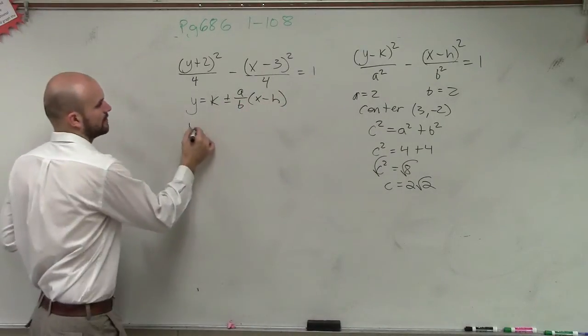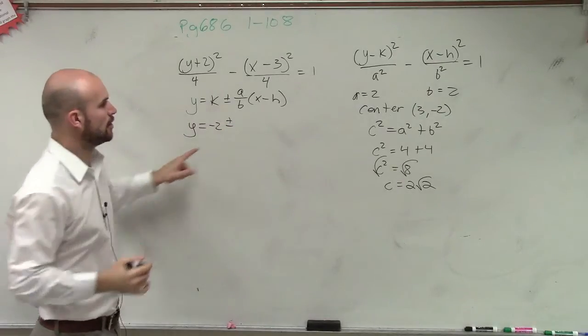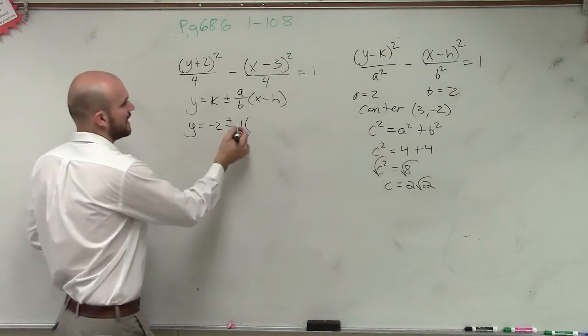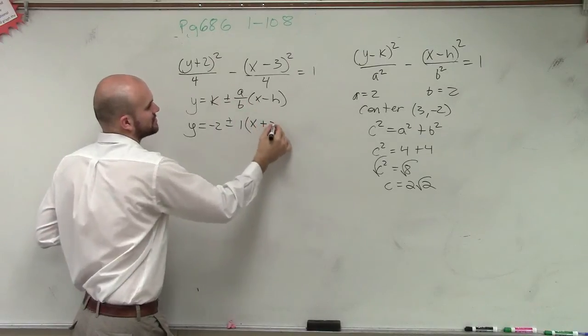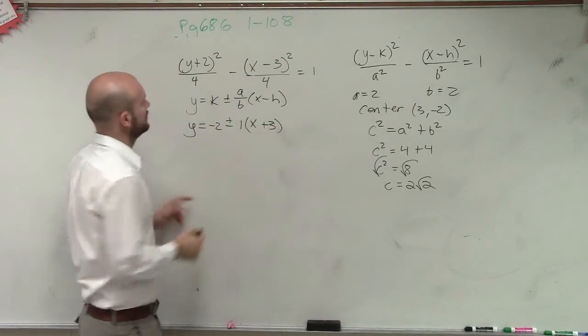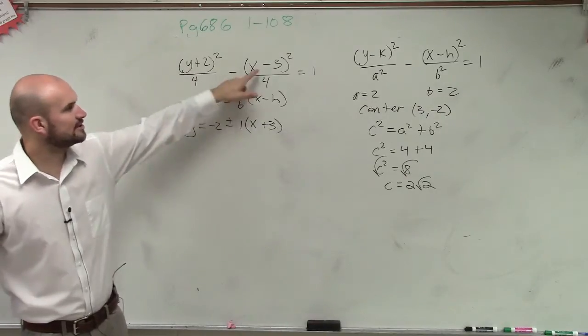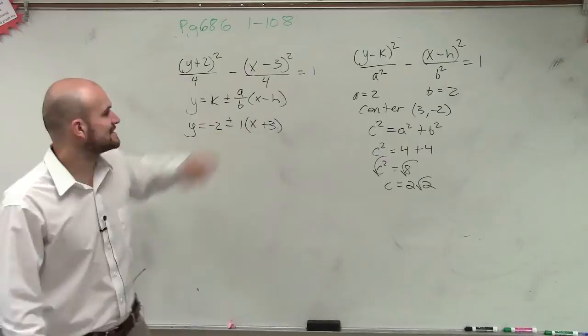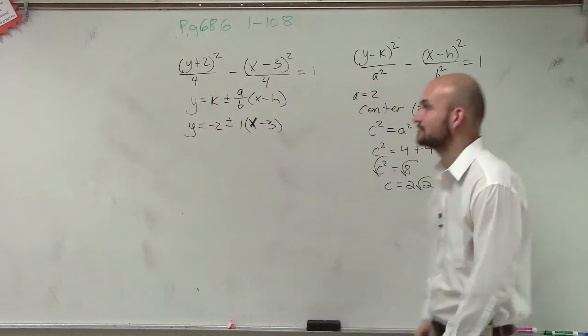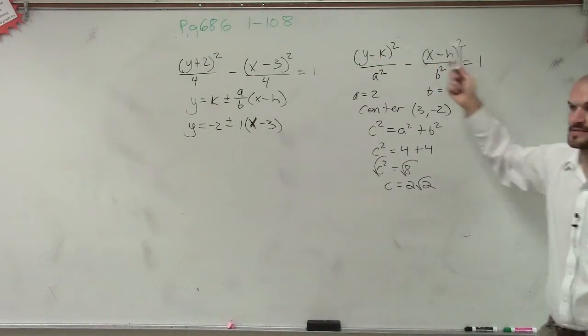So now let's plug in the information we know. Remember, it's different for vertical and horizontal. So y equals k, which is negative 2, plus or minus our a over our b, which is 1, times x minus h, which is x minus our h. So it would be... wait, our h is 3, so it's x minus 3.